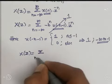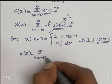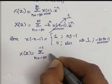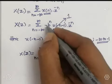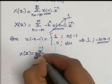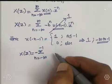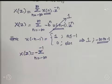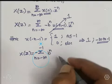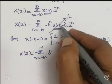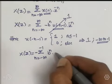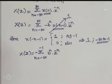X(Z) = summation from n = -∞ to -1 of [-B^n · Z^(-n)], where u(-n-1) has been replaced by 1.